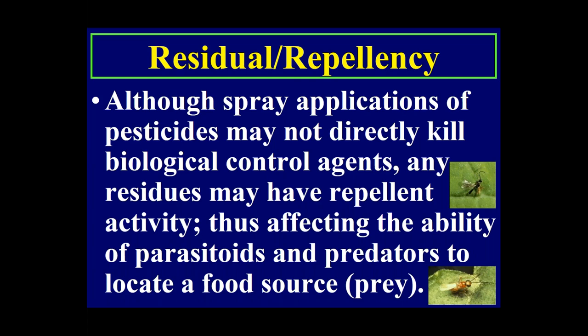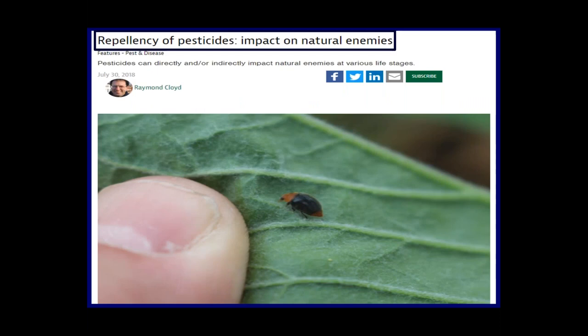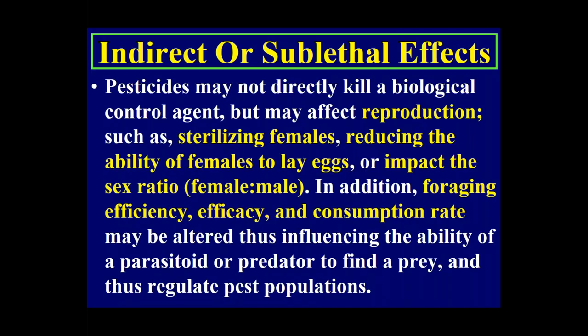Although spray applications of pesticides may not directly kill biological control agents, any residues may have repellent activity. Many pyrethroids — such as Talstar (bifenthrin), cyfluthrin, and others — repel insects away from treated areas. This can affect the ability of parasitoids and predators to locate viable food sources; they'll go away from the area and either starve, die, or find prey elsewhere. I wrote an article called 'Repellency of Pesticides: Impact on Natural Enemies' which you can download from Google.